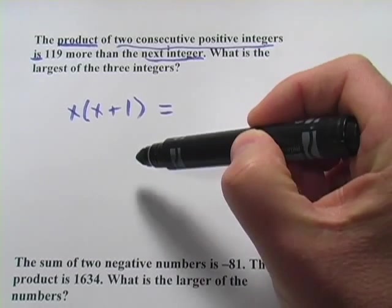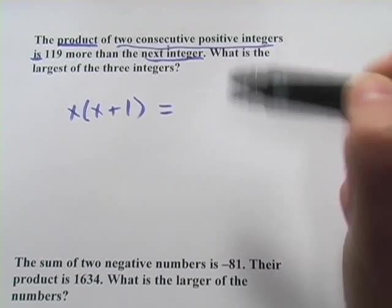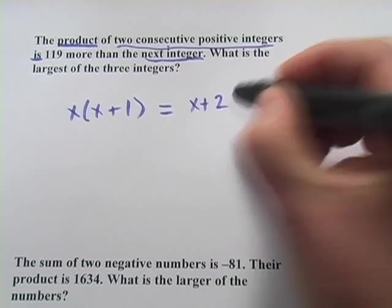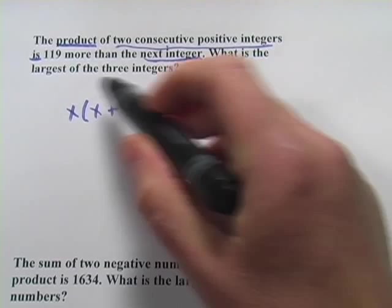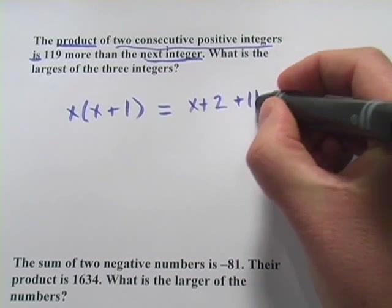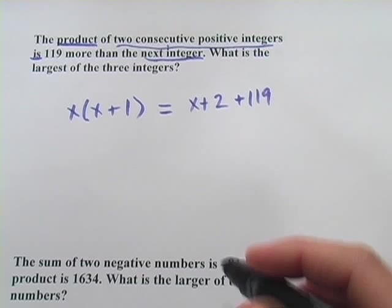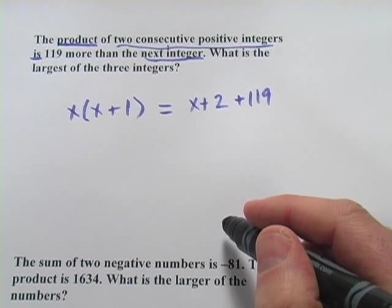Let's call the first one x. The next one, since they're consecutive, would just be x plus 1. On the right, it says 119 more than the next integer. So what's the next integer? Well, we have x, we have x plus 1. The next integer is x plus 2, but this quantity here is 119 more than that, so we have to add 119.